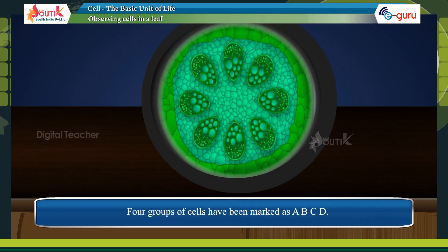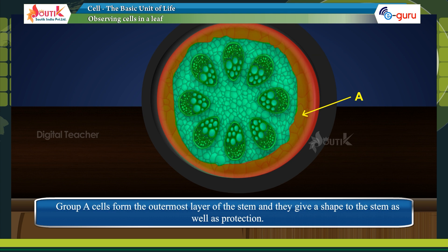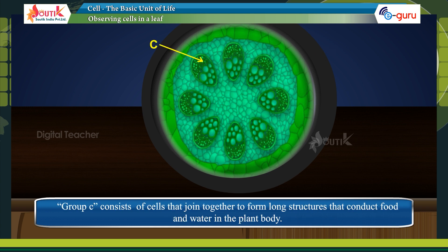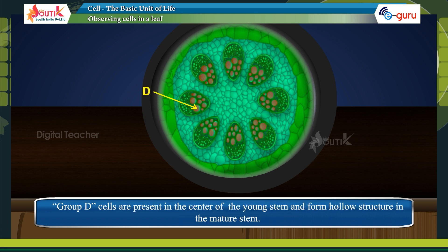Four groups of cells have been marked as A, B, C, and D in the figure. Group A cells form the outermost layer of the stem and give it shape and protection. The major portion of the stem is made up of Group B cells. In the green stem, this portion has special organs that carry out photosynthesis. Group C consists of cells that join together to form long structures that conduct food and water in the plant body. Group D cells are present in the center of the young stem and form a hollow structure in the mature stem.